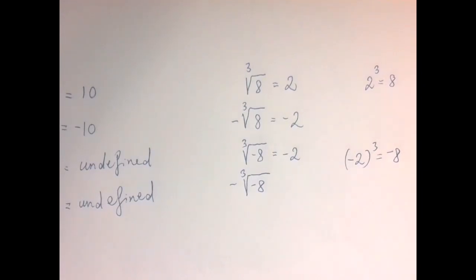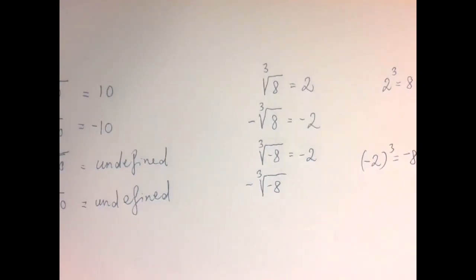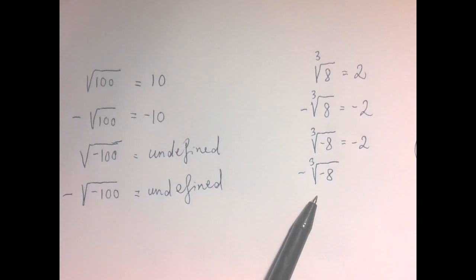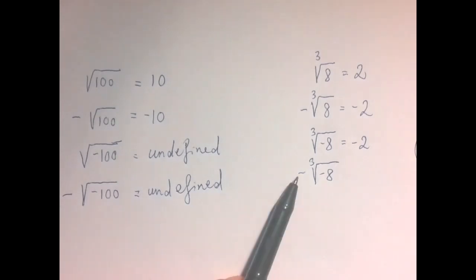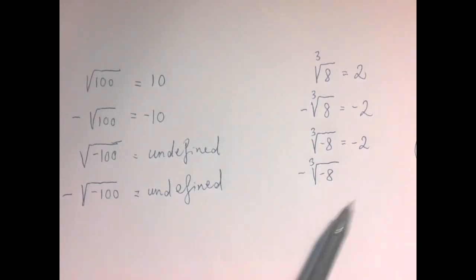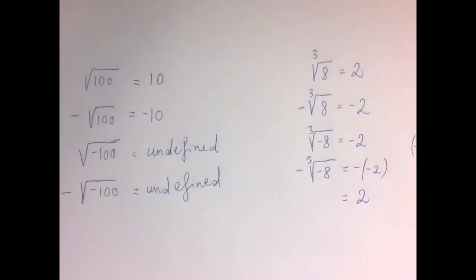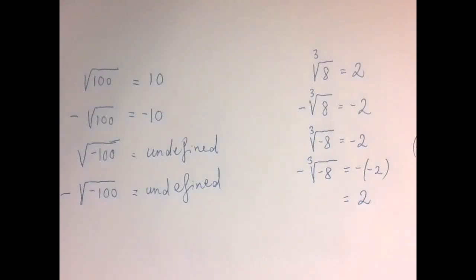That's very different from how square roots behave. The last expression is the opposite of the third root of negative 8. That would be the opposite of negative 2, which is positive 2.